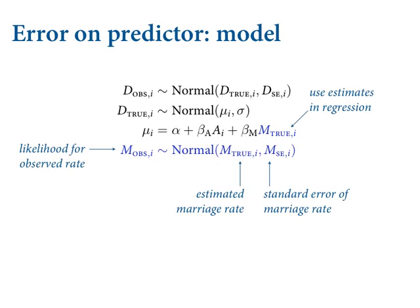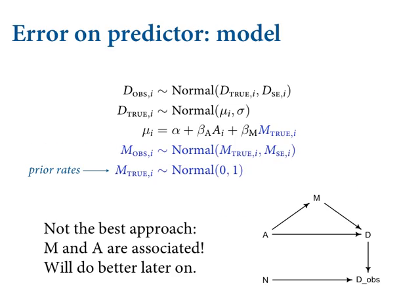That's error on the outcome. You can also have error on predictor variables, and those go into the model the same way. Be ruthless — you've got a generative model. The marriage rate in each state is also measured with error. Here's the model: the very first line is the observation process on divorce rate, then we've got the regression of the true divorce rate on age of marriage and marriage rate. But inside the linear model we have M_true, not the observed M. M_true is a parameter — one for each state — so this last term is a parameter times a parameter.